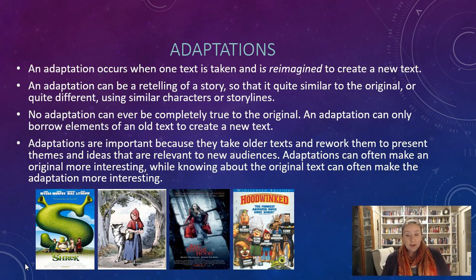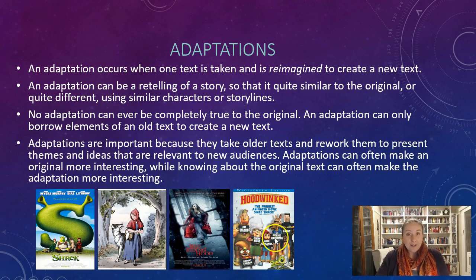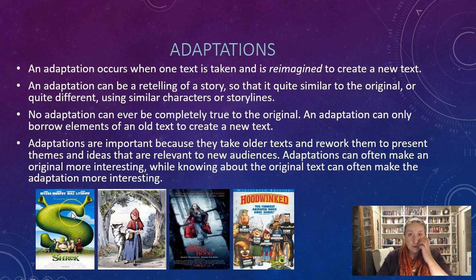An adaptation can be a retelling of a story that is quite similar to the original or quite different, using similar characters or storylines. If you look down here, we've got things like Little Red Riding Hood, which has been adapted into all sorts of different films. There's the original Little Red Riding Hood, which was a really scary film, and Hoodwinked, which most of you might know — it takes the story of Little Red Riding Hood but makes it really modern — as well as Shrek, which uses aspects of the wolf.